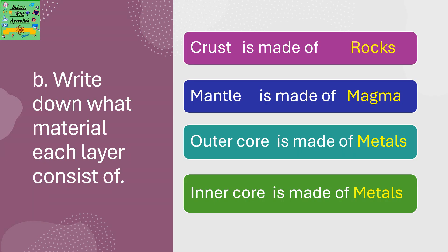The crust, which is the ground or the uppermost surface, is made of rocks, which is the hardest. The mantle is made of magma. The outer core and the inner core are both made of metals.